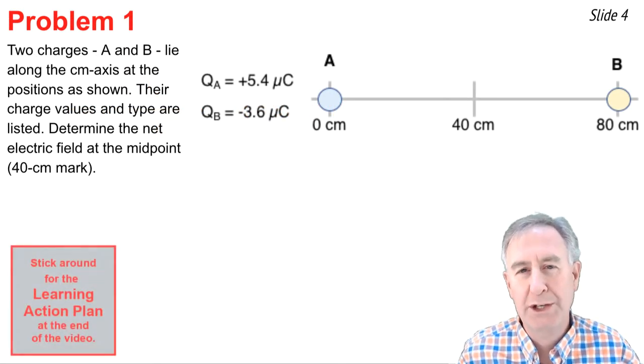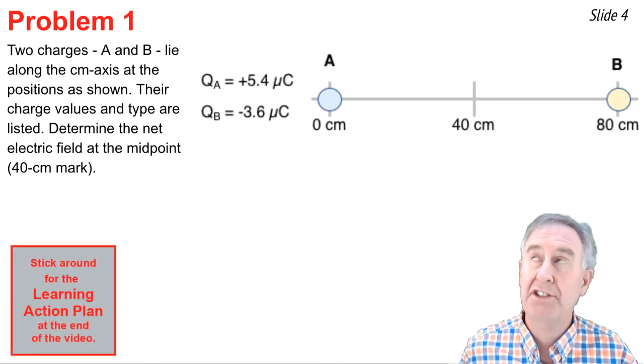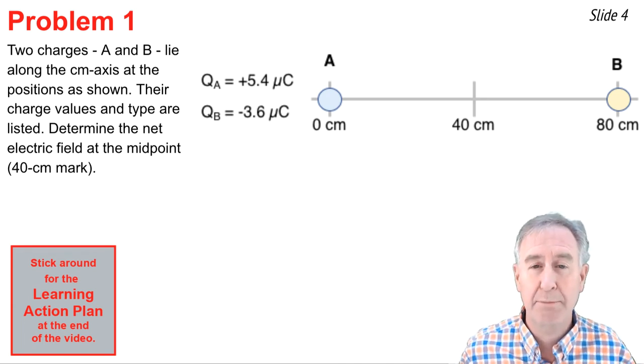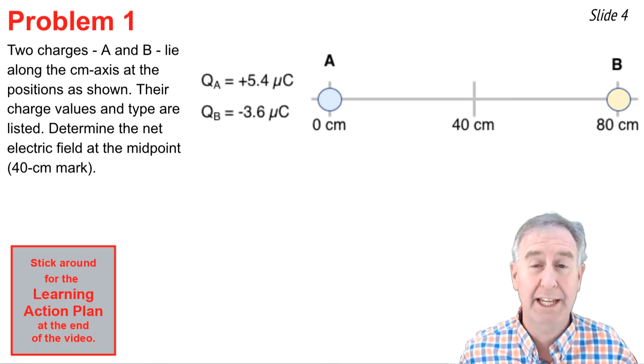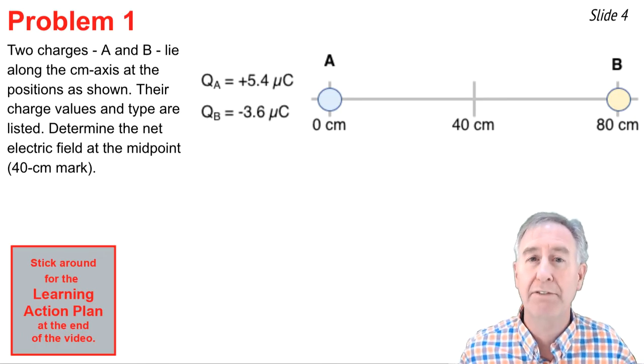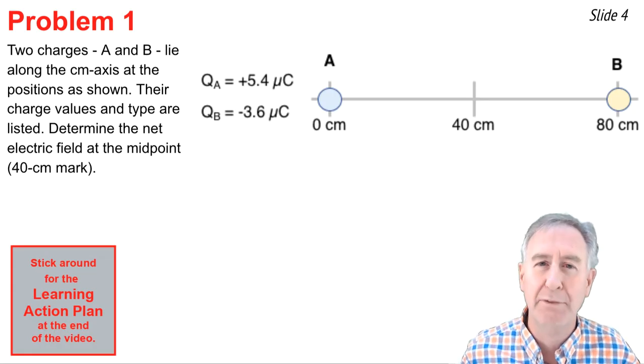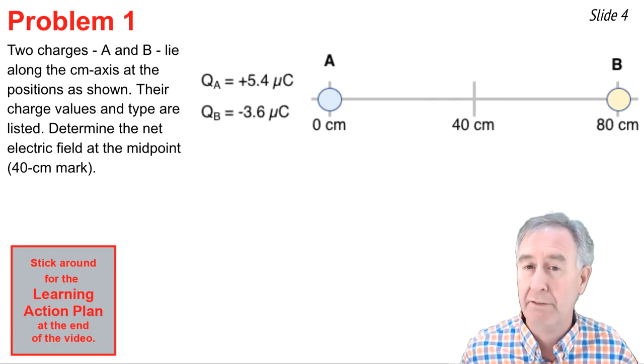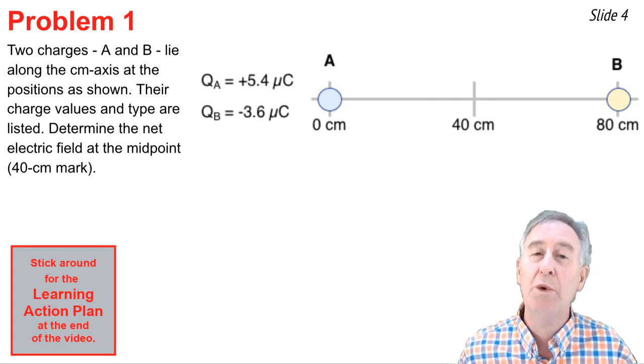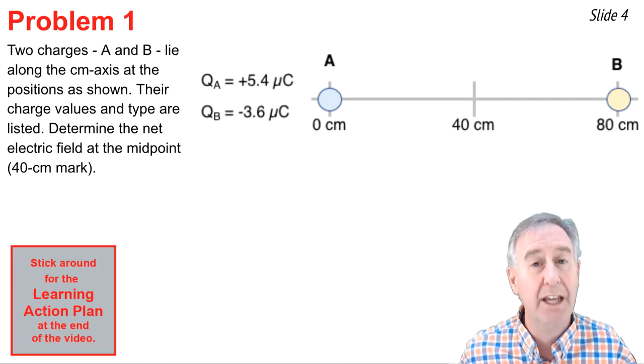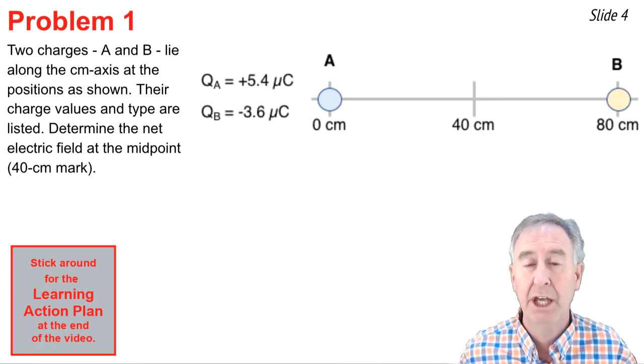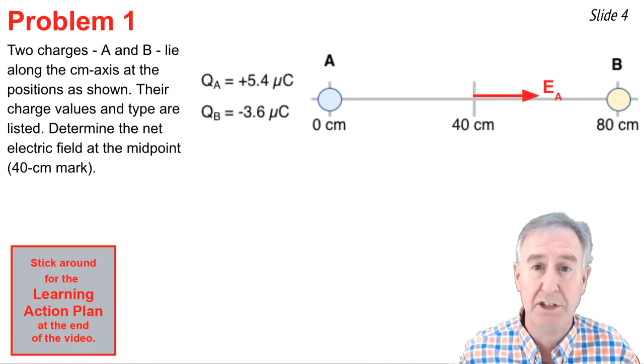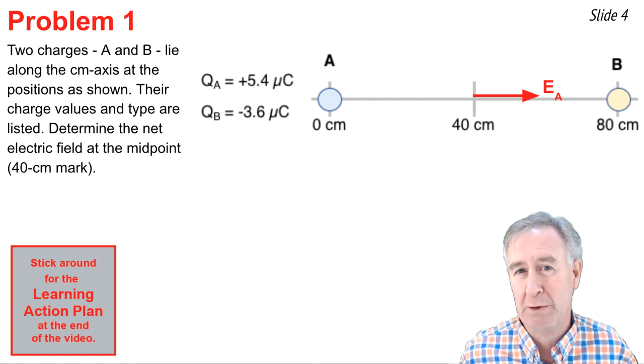In the first problem, we have two charges A and B that lie along the x-axis as shown and are 80 centimeters apart. The quantity and the type of charge on A and B are indicated in the diagram. We want to calculate the value for the net electric field at the midpoint between A and B, that is at the 40 centimeter mark. So there's two charges here and each creates its own electric field at this midpoint. We want to calculate the value of each and then add them together to get the net electric field. When it comes to A's electric field, it's directed to the right because A is a positive source charge and it pushes a positive test charge to the right.